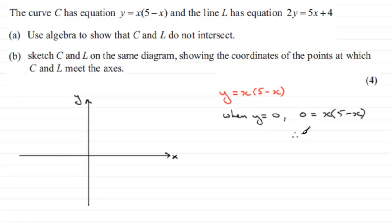So we could say therefore x equals 0 or 5 minus x equals 0, and that would lead to x equaling 5.